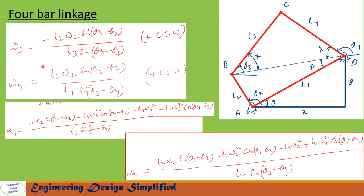Now to find angular velocity of the coupler and follower links, we need to differentiate the previously discussed position equations once and solve for omega 3 and omega 4, giving us these two equations. Similarly, to find angular acceleration of the coupler and follower links, we differentiate the position equations twice and solve for alpha 3 and alpha 4, giving us these two equations. These equations are the same for a four-bar mechanism of any orientation.